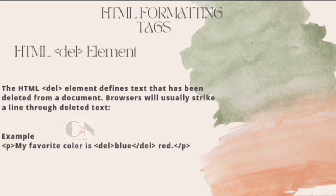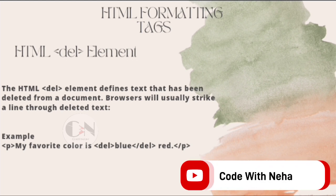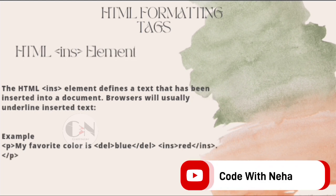The HTML del element defines text that has been deleted from a document. Browsers will usually strike a line through deleted text. Example: within a p opening and closing tag — 'My favorite color is' — with 'blue' within the del opening and closing tag, then 'red'.